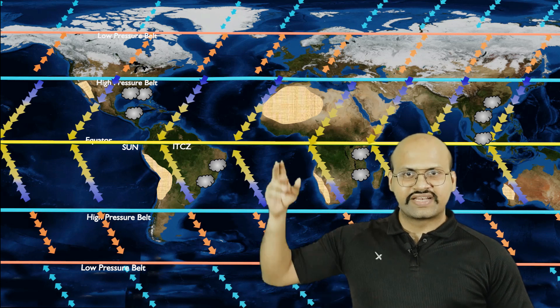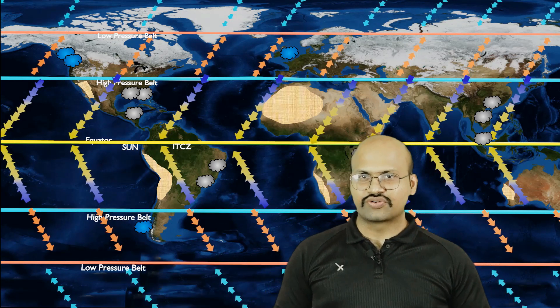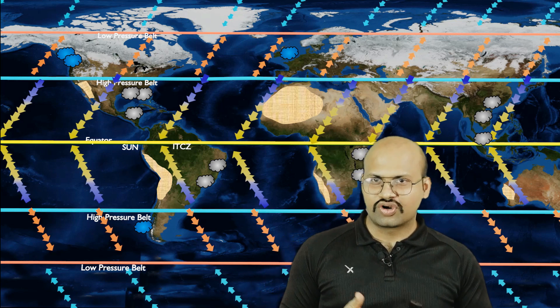At higher latitudes, the westerlies bring rain to the western margins of continents in the temperate region under the Ferrel cell. We can see some rainfall over here and again over here. These westerlies do not bring rain to the eastern margin of continents. So easterly winds bring rain to the eastern margins but not the western margins, and westerlies bring rain to the western margins but not the eastern margins.